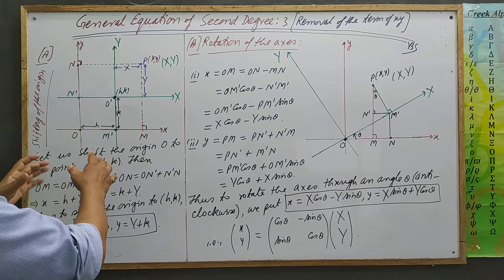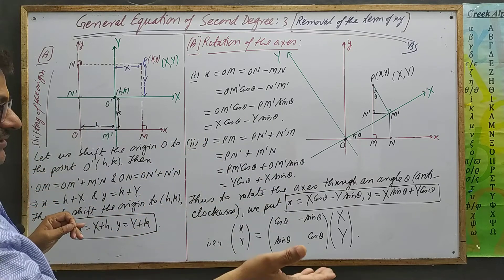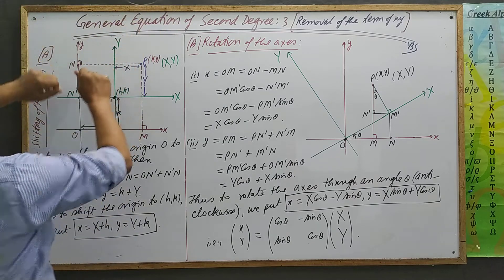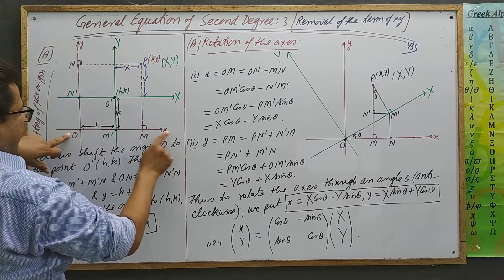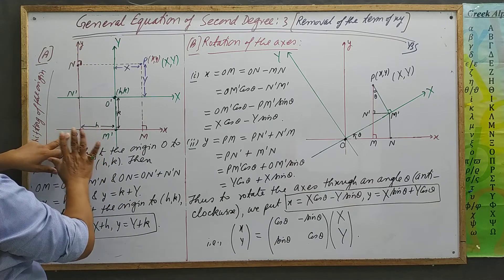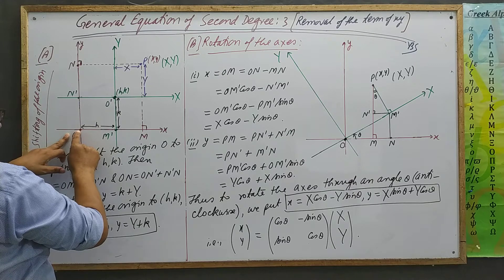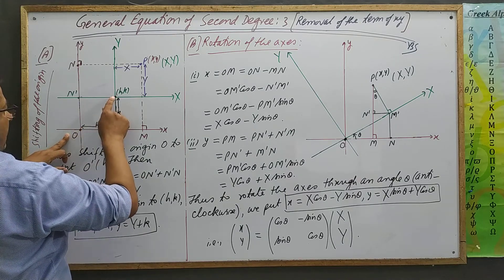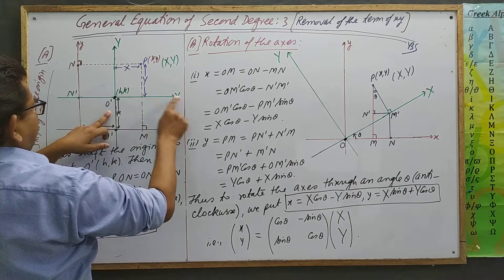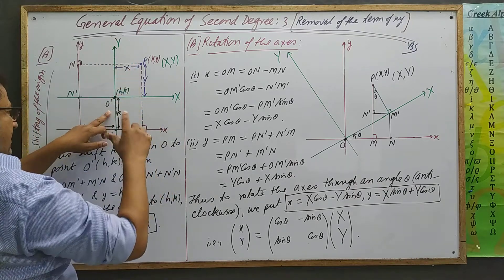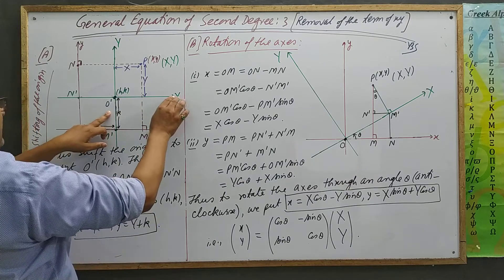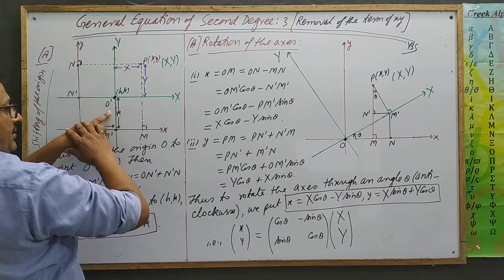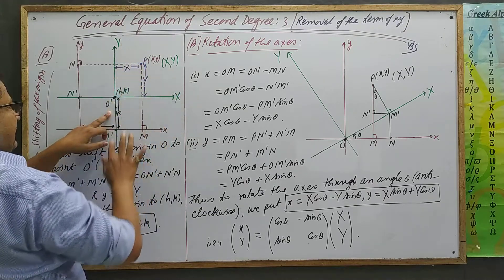We also need to discuss shifting the origin, because this concept will also be needed ahead in this playlist. So look — we have a small x-axis, small y-axis, and an origin: one coordinate system. Now we want to shift the origin to a certain point, so the origin has come here. From here we create a new system with capital X-axis and capital Y-axis, shown in green color.